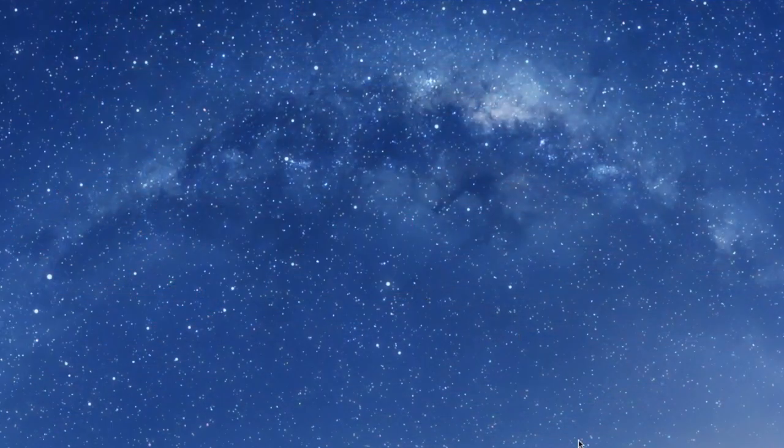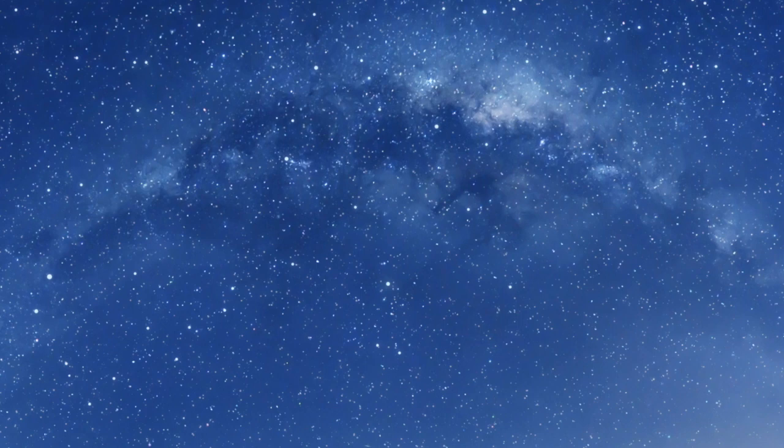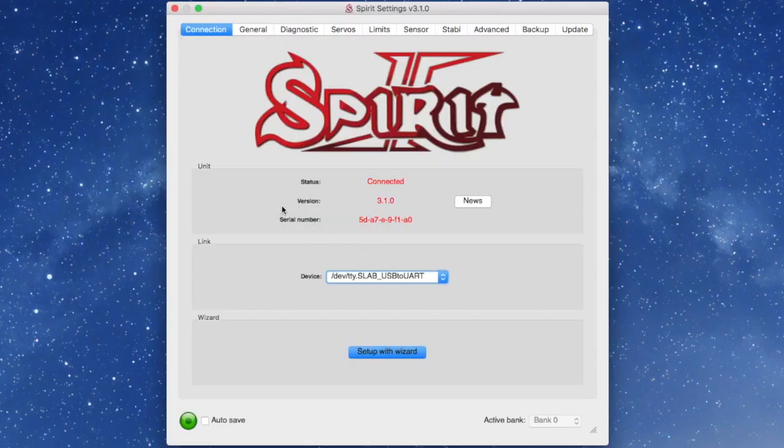And what I'm going to do here is I'm going to open up the Spirit Settings app that just downloaded. Now when you very first open yours, if you have not yet completed the update, you might see an error message that says please update, or it might say that it's not compatible, please update, something along those lines. It'll still let you get into this situation here, but it'll say not connected and it'll tell you your version. It'll tell you your serial number.